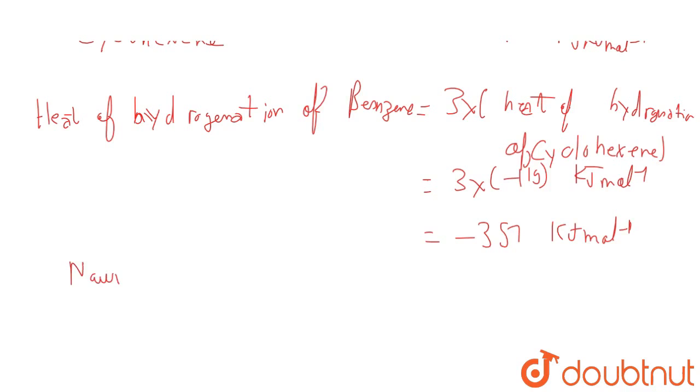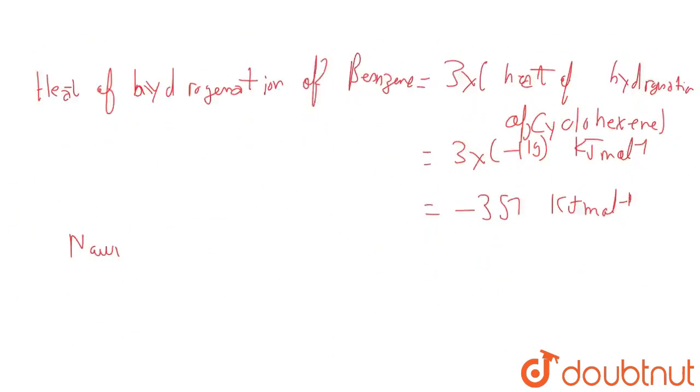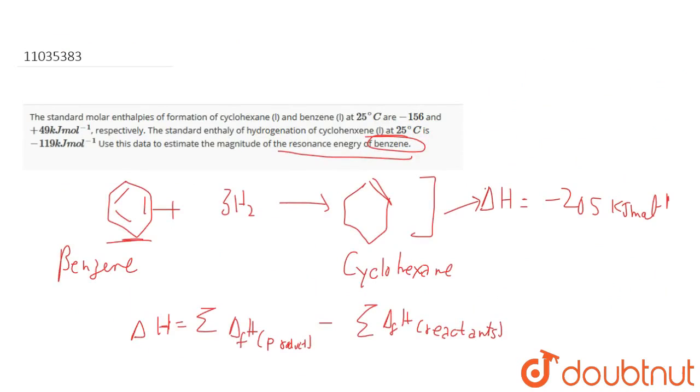Now, the net enthalpy of this particular equation can be written as: delta H equals net heat of hydrogenation plus the resonance energy in benzene. The net enthalpy of this reaction can also be written as the sum of the net hydrogenation energy of this particular reaction plus the resonance energy of benzene.